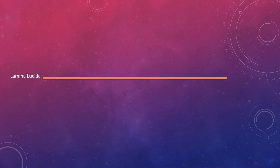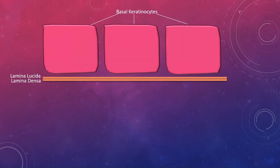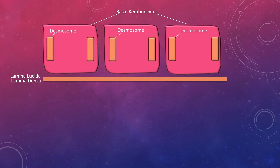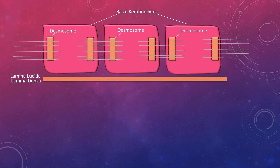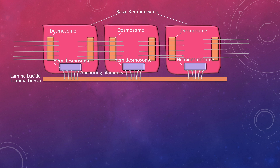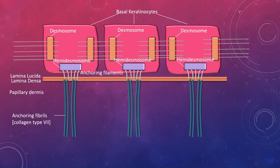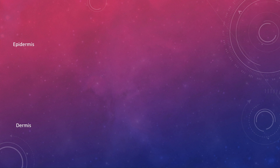The basement membrane consists of lamina lucida and lamina densa. On this basement membrane, the basal keratinocytes rest. They attach to each other via desmosomes and fibrils, and they attach to the basement membrane with hemidesmosomes and anchoring filaments. This whole structure anchors through the papillary dermis via anchoring fibrils, which consist of collagen type 7.